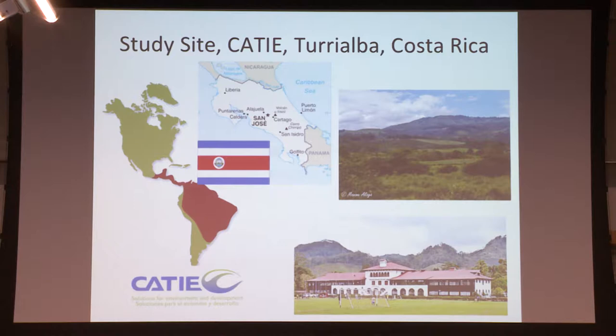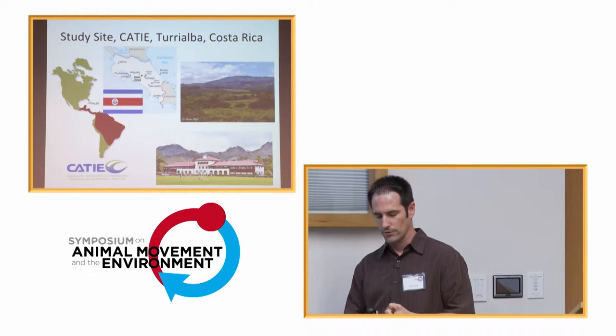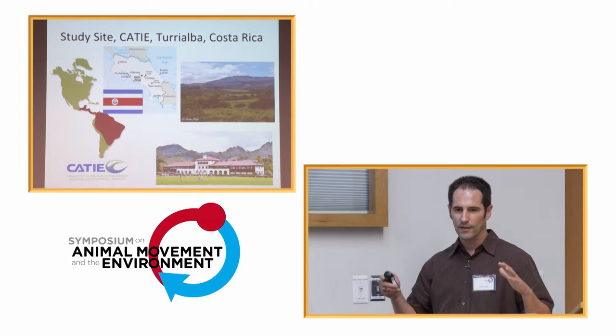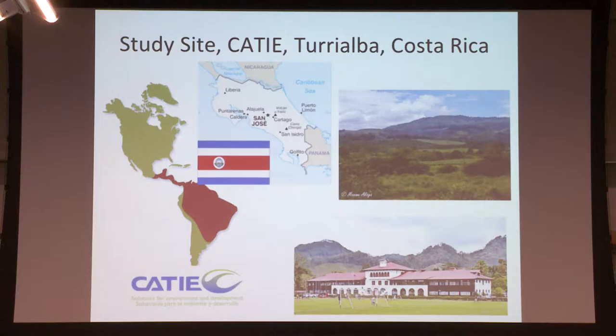My study site is at 600 meters elevation on the Caribbean slope of Costa Rica in a fragmented mosaic of coffee, chocolate, and sugar cane plantations mixed in with forest fragments. A lot of these are sustainable, so there are trees in some of them and not others. There's this big mess of fragmentation but with mixed-in forest fragments and other elements like live fences that can help connect these forest fragments.